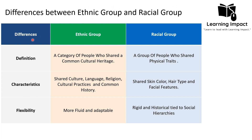An ethnic group is a category of people who share a common culture and heritage. This means they must have a collection of individuals with some common traditions and cultural heritage, which might include customs, traditions, religion, and language. So an ethnic group's foundation is based on similar culture, traditions, and sometimes ancestry.